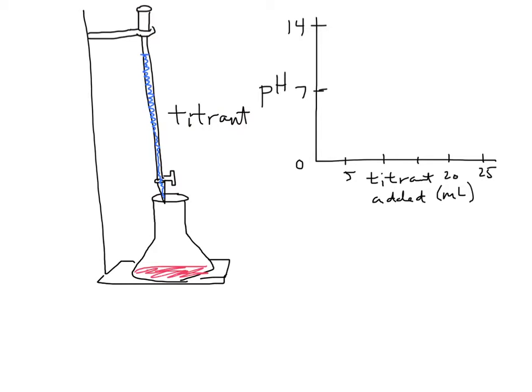The burette delivers the titrant into a reaction vessel — typically an Erlenmeyer flask — where we have put a known volume of an unknown concentration of liquid. In our lab we used vinegar, just household regular vinegar. Our goal was to take something that we know about, in this case the titrant's concentration, and use how much volume it takes to neutralize the acid sample to tell us something about its concentration.